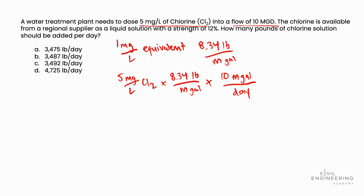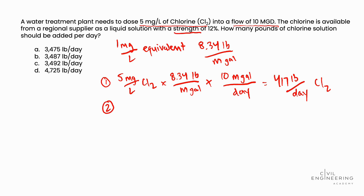We work this out and we get that there are 417 pounds per day of Cl2 chlorine that are needed. But that's not our answer — we'll call that step one. In step two, we need to look at the problem statement again, and we're told that the liquid solution has a strength of 12%. So the chlorine is actually diluted. We know 12% is equal to 0.12 in decimal form.